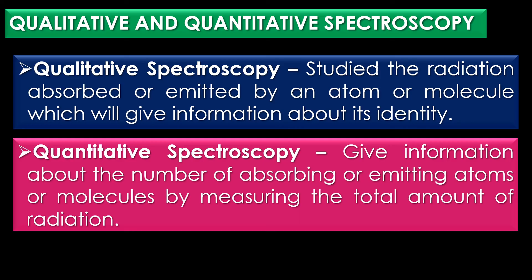Qualitative spectroscopy techniques study the radiation absorbed or emitted by an atom or molecule, which gives information about its identity. Quantitative spectroscopy techniques give information about the number of absorbing or emitting atoms or molecules by measuring the total amount of radiation.